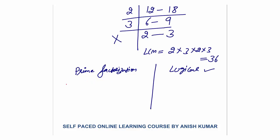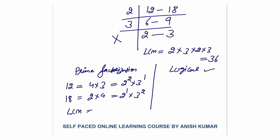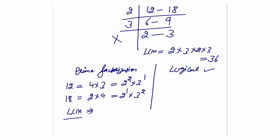Let me discuss the prime factorization method. 12 is 2 squared into 3 to the power 1. 18 is 2 to the power 1 into 3 squared. For LCM to be divisible by 12, the power of 2 in LCM must be 2 squared. The power of 3 in LCM must also be 2. So LCM is 2 squared into 3 squared, which equals 36.